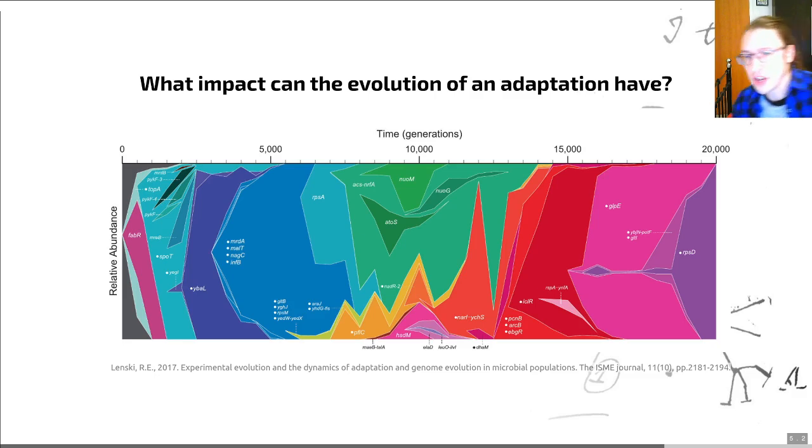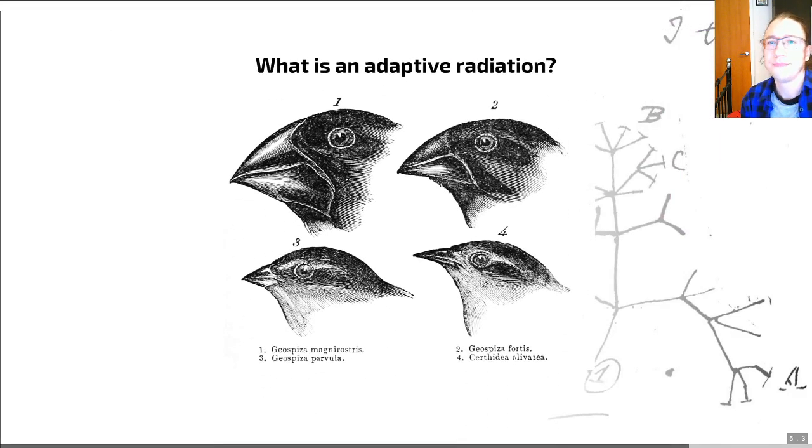But note that this is occurring in a single-celled, non-sexual, prokaryotic organism. So what impact on evolution can adaptation have in the kind of sexual organisms that we've been talking about for much of this course? Well, that's what brings us to the idea of adaptive radiation.